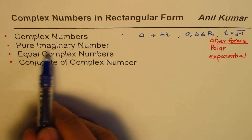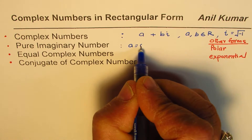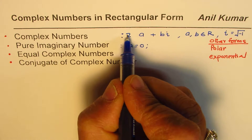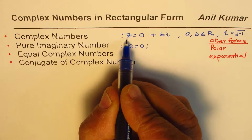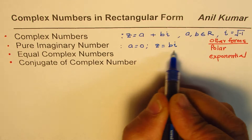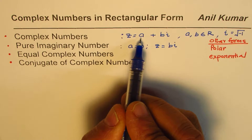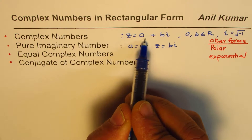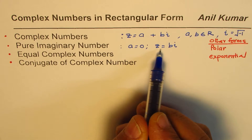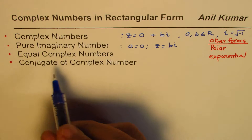Now let's talk about what a pure imaginary number is. If a complex number is a plus bi and a equals zero, then the complex number z will be equal to bi. In this case the complex number only has the imaginary part. If a is zero, we say it's a pure imaginary number: z equals bi.